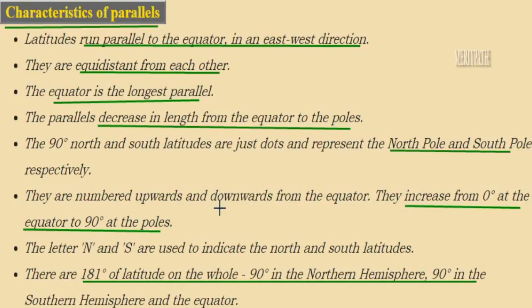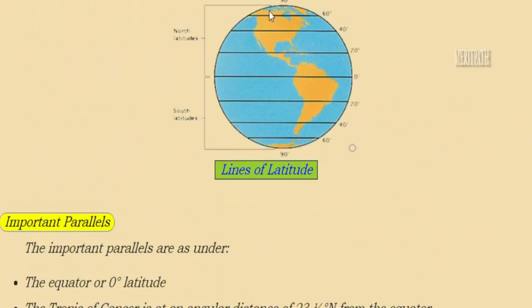The 90 degrees north and south latitudes are known as the north pole and south pole. Latitude lines are numbered upward and downward from the equator — starting at zero degrees and ending at 90 degrees at the poles. The north pole and south pole are indicated using the letters N and S. In total, there are 181 degrees of latitude — 90 degrees in the northern hemisphere, 90 degrees in the southern hemisphere, plus the equator line itself.